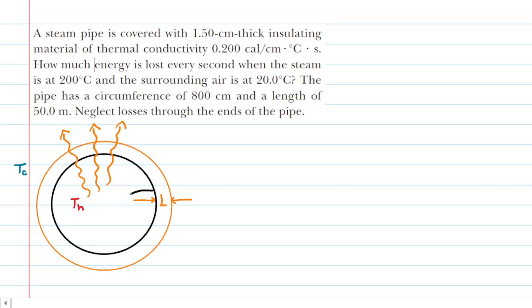First, it depends on the thickness of the insulation. This question noted that the insulation is 1.5 centimeters thick, so we already know that L equals 1.5 centimeters. The rate at which energy transfers is also dependent upon these temperatures. The inside temperature of the pipe where the water is circulating is 200 degrees Celsius, and the outside temperature in the surroundings, T sub C, is 20 degrees Celsius.